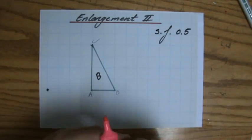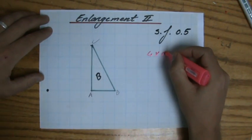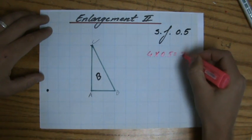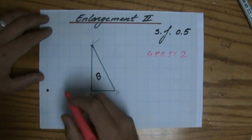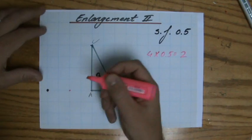With a scale factor of a half now, those 4 blocks times a half become 2 blocks. So A apostrophe is going to be over there.